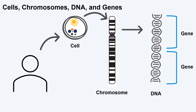Our cells contain structures called chromosomes. Our DNA is our body's instruction manual, telling our bodies how to develop and function. Each instruction is called a gene. Chromosomes hold our genetic information, or our DNA, and keep all our genetic information packaged into our cells.